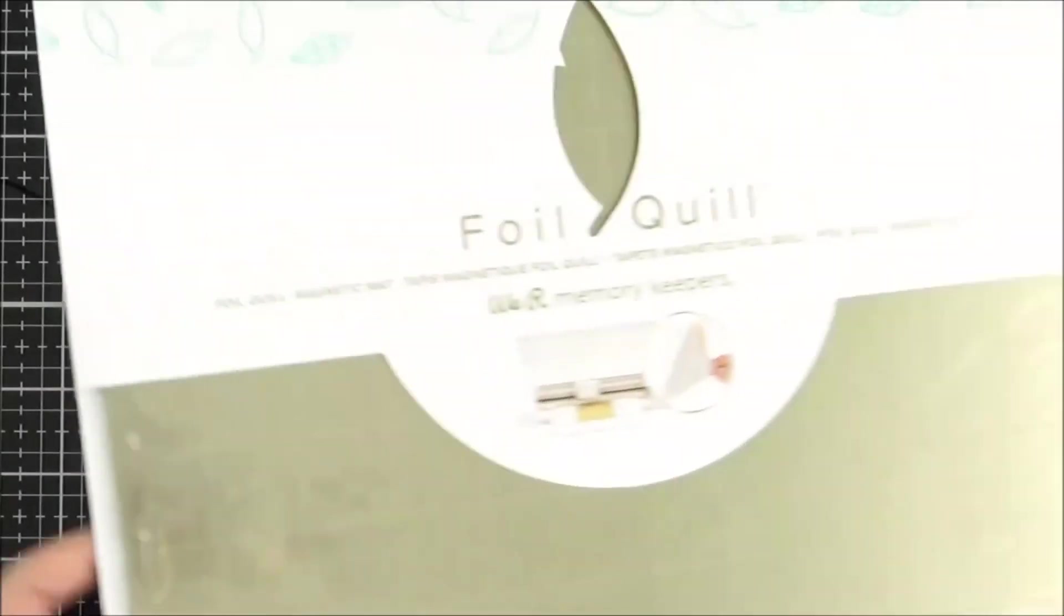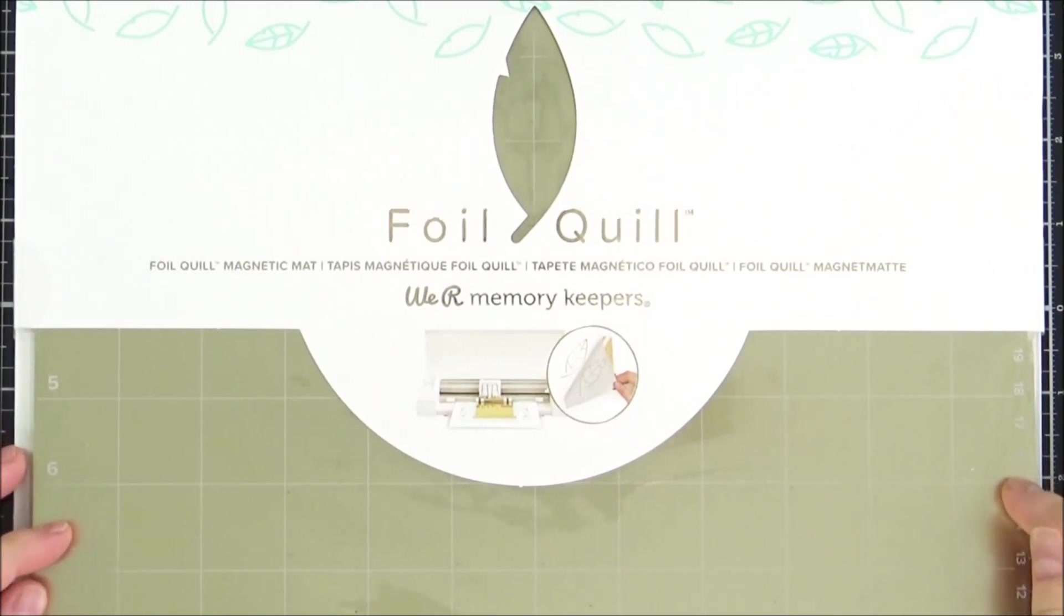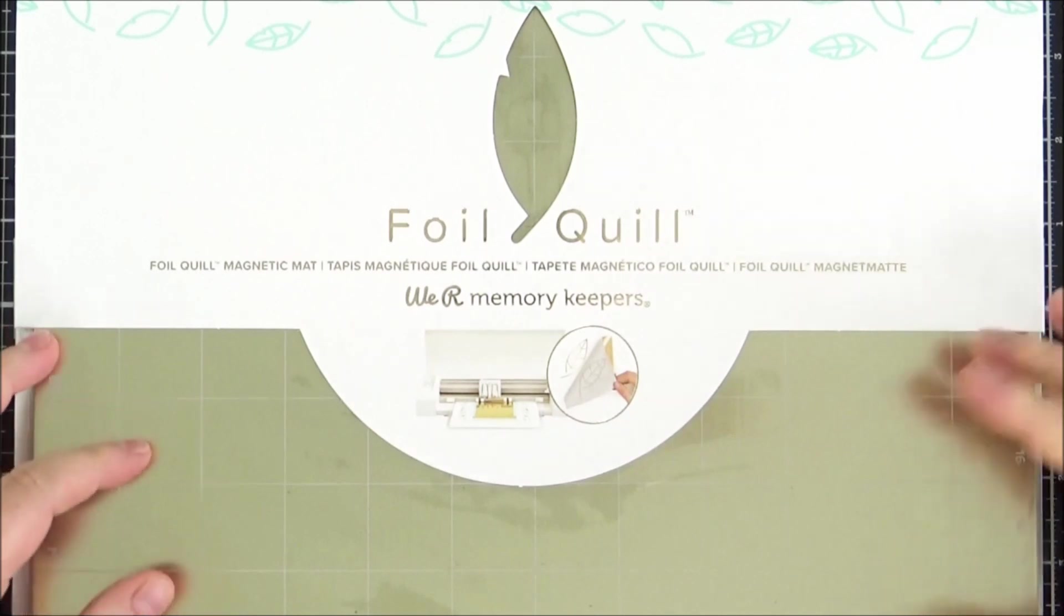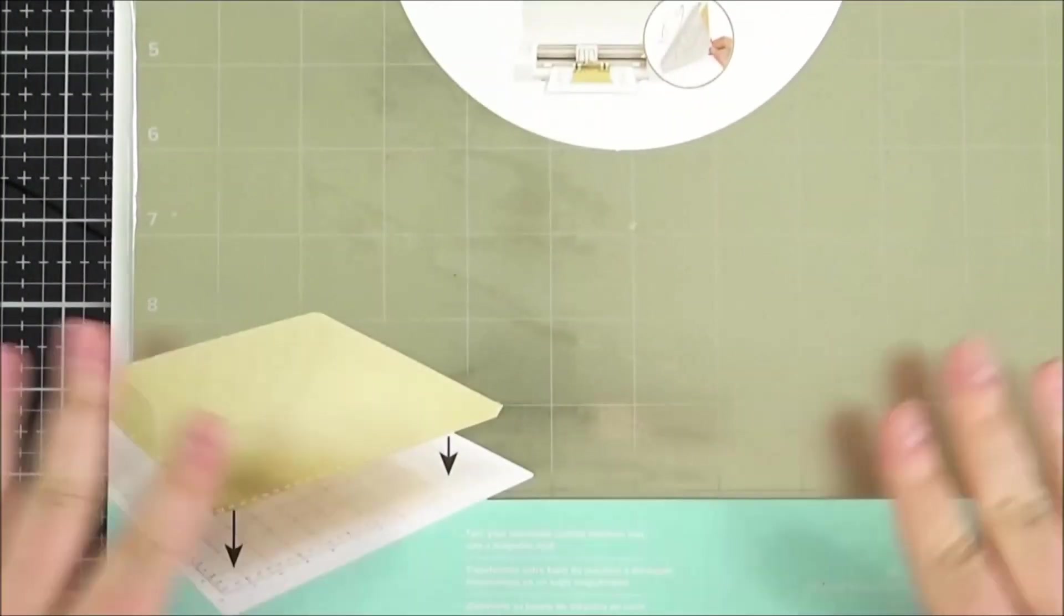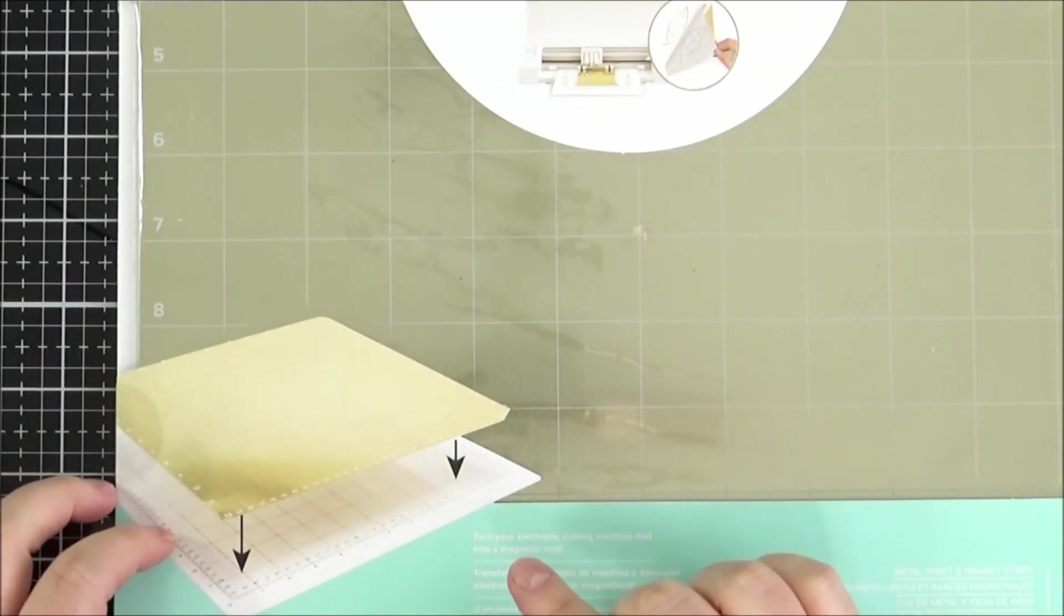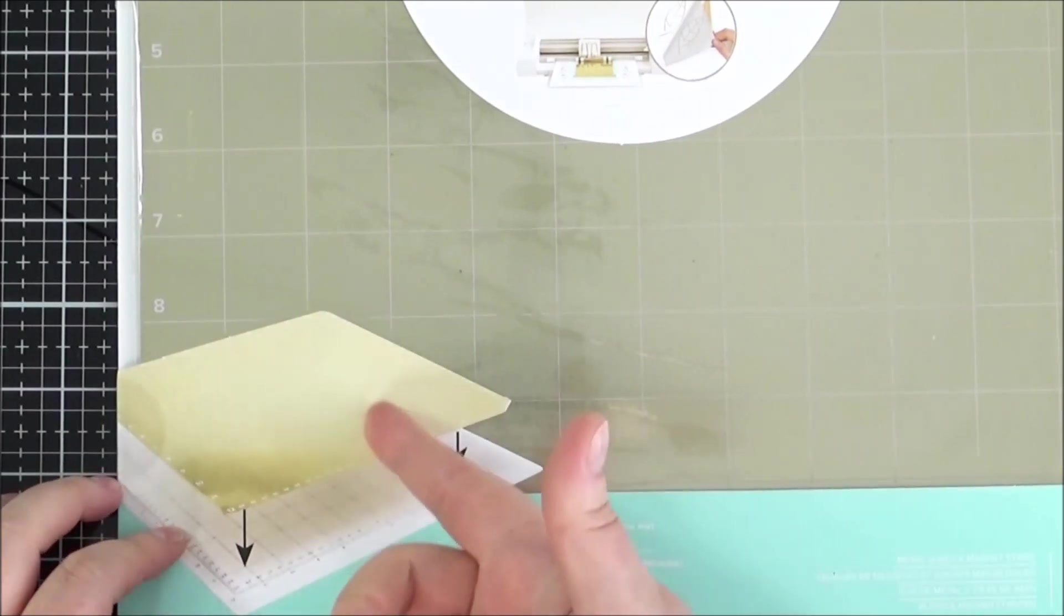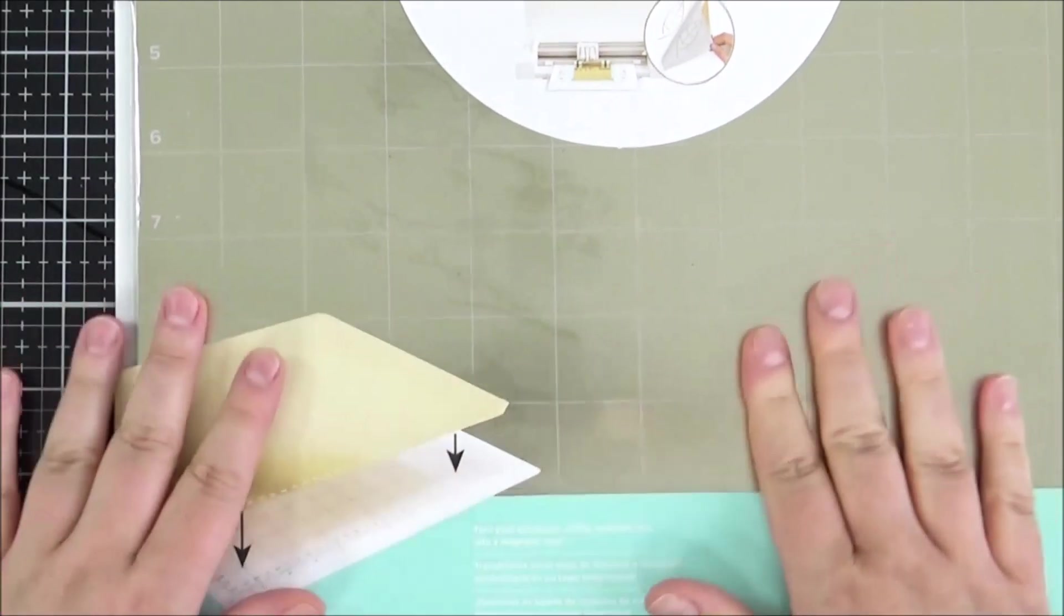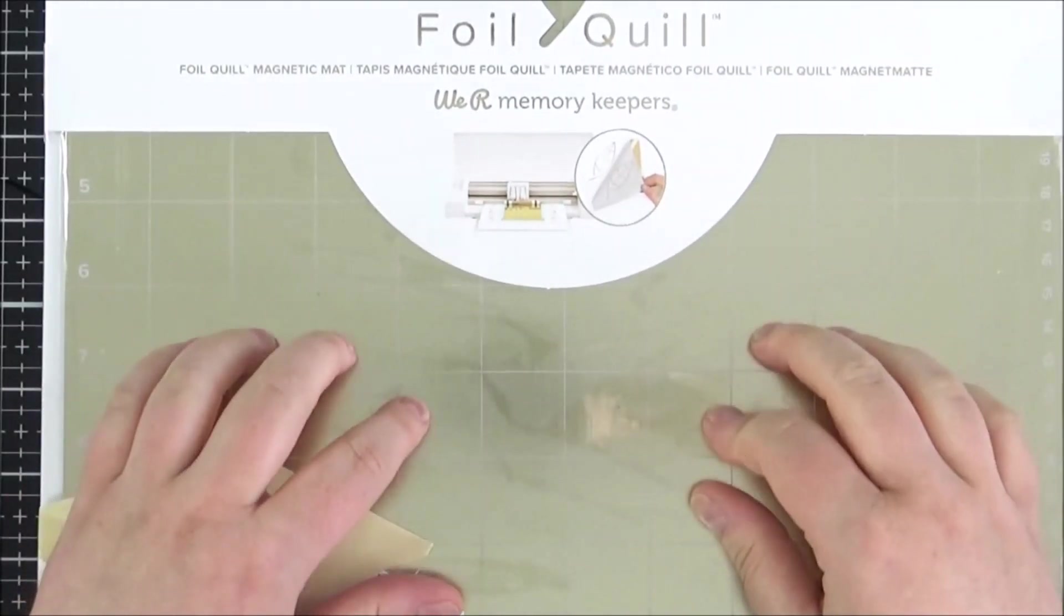Another tool kind of thing, I picked up the foil quill from We R Memory Keepers. This is the magnetic mat that works with the foil quill. So the idea is that you stick this magnetic mat onto one of your craft mats. So in my case I use the Cricut as an electronic die cutting machine so whatever machine you use you take the mat and then you stick it on this and then it helps to stick the paper and the foil down onto it.